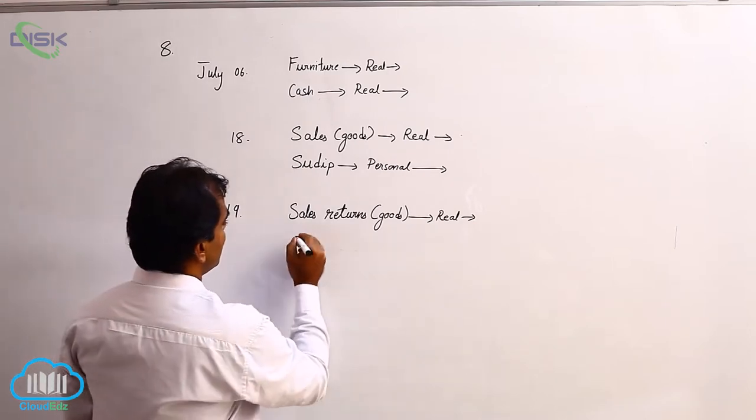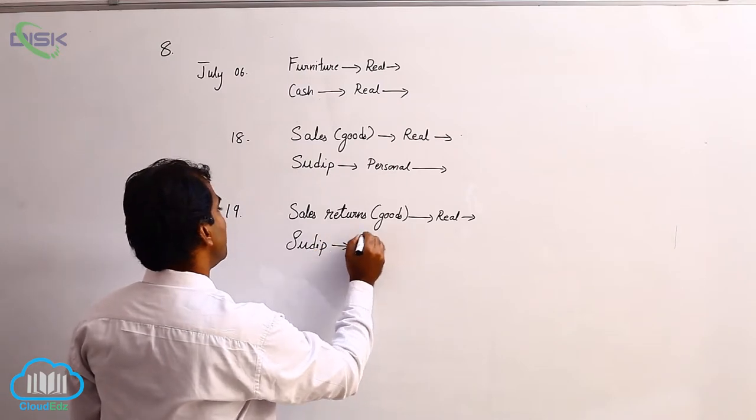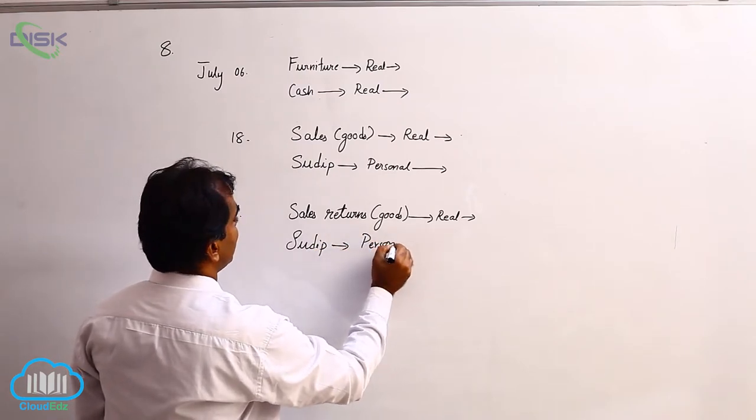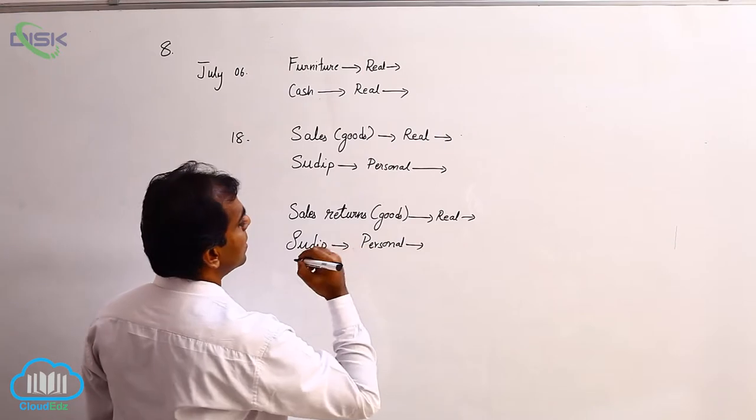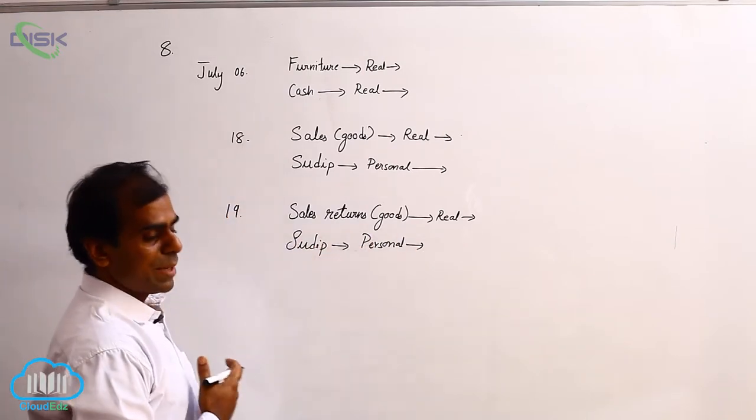Next, who is returning the goods? Sudip. So Sudip is again becoming a personal account. Check whether he is giving the goods or receiving the goods, and using the same, the rule, you debit him or credit him.